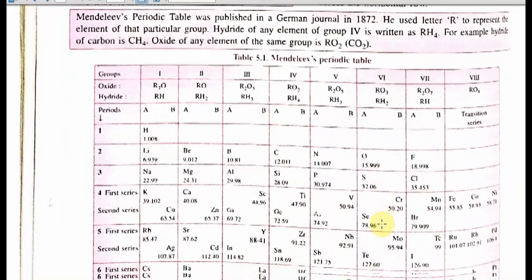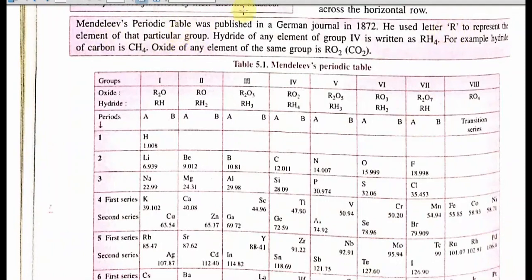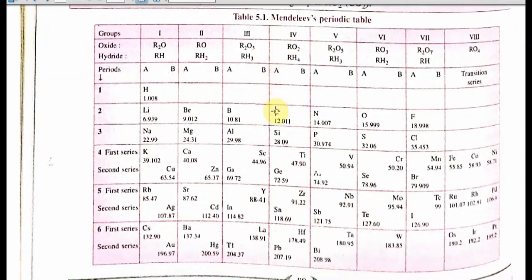Each of the groups from 1 to 7 were divided into two subgroups. Group 8 has no subgroup. Inert gases were not known at that time. All elements of a subgroup have similar properties and similar valences — equal to the group number for groups up to 4, or 8 minus the group number for groups 5 to 8. In a period, elements gradually change from metallic to non-metallic character as we move from left to right across the row.